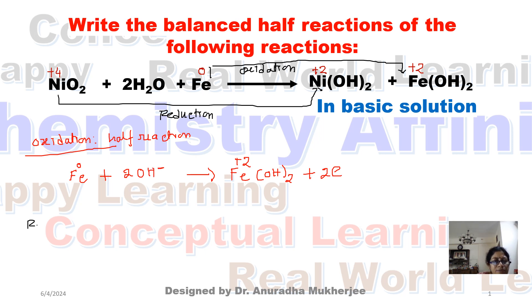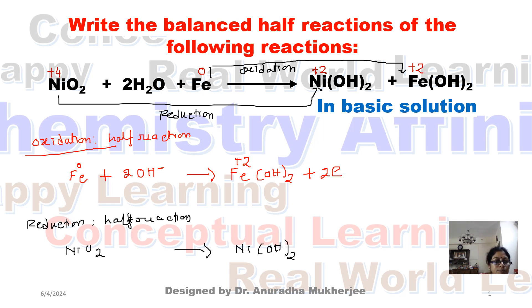Now the second half-reaction is reduction. Here we have to write nickel oxide to nickel hydroxide. Nickel goes from plus 4 to plus 2, so on the left-hand side we have to add 2 electrons. On the left-hand side there are 2 oxygen atoms, and on the right-hand side there are also 2 oxygen atoms but 2 hydrogen atoms are there, so we can add 2 H plus. Now nickel is balanced, oxygen is 2 on both sides. So this is the balanced half-reactions for oxidation and reduction.